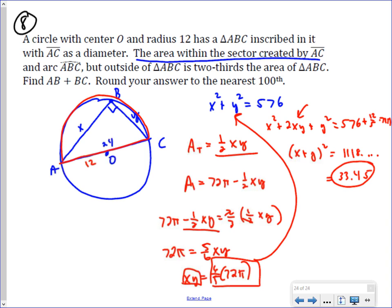So X plus Y, we never actually figure out what X or Y are, but by going through and doing these calculations and doing this manipulation, we're able to find out that the sum of those two, AB plus BC, we can find, and that is 33.45.